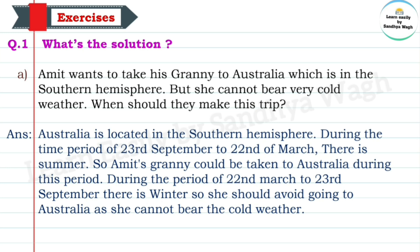Australia is located in the Southern Hemisphere. During the time period of 23rd September to 22nd March, Amit's granny could be taken to Australia during this period. During the period of 22nd March to 23rd September, there is winter in Australia, so she should avoid going as she cannot bear the cold weather.